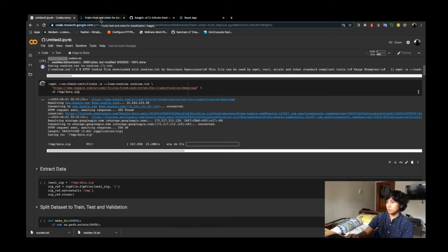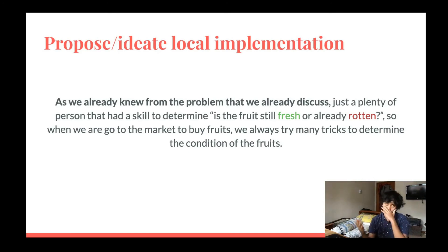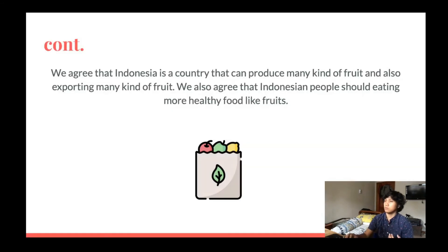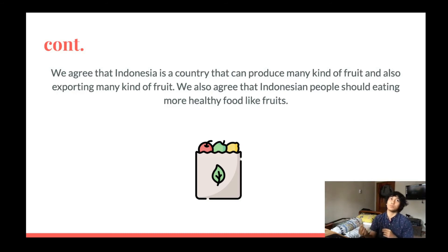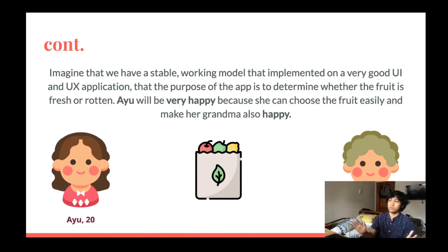After that, we go to another section which is the local implementation of our model. Just like what we already discussed — Ayu and her grandmother's problem — we give you an example of a usual problem that people face when buying fruit at the market: it is hard to determine which is fresh fruit and which is rotten fruit. We also agree that Indonesia is a country that produces and exports many kinds of fruit, and that Indonesian people should be eating more healthy food such as fresh fruits. Imagine having a stable working model implemented in a very good UI/UX application to determine whether the fruit is fresh or rotten. People like Ayu will be very happy because they can choose fruit easily at the market.